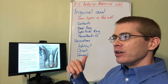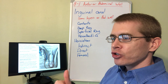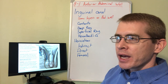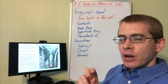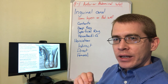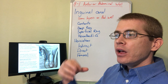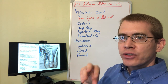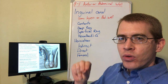Deep to that, the aponeurosis of the internal abdominal oblique is pulled down as the next layer of the spermatic cord. This layer actually develops some muscle fiber in it because it's derived from the internal abdominal oblique muscle. These muscle fibers are called the cremaster muscle, which is important in the male to raise and lower the testicle.